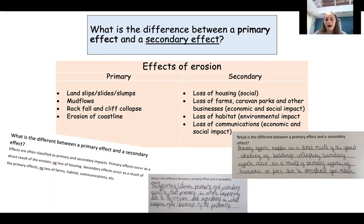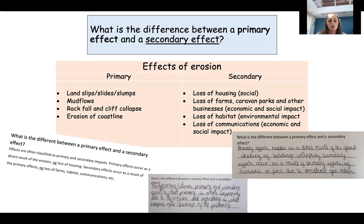A secondary effect happens as a result of the primary effect. For example, the sea erodes the coast, the cliffs weaken and collapse — that's the primary effect. If there's a house on top of that cliff, the house falling is a secondary effect because it's the cliff collapse that caused it. Similarly, erosion causing a landslide is the primary effect; the destruction of a farm by that landslide is the secondary effect.